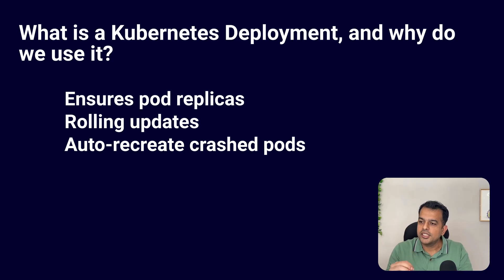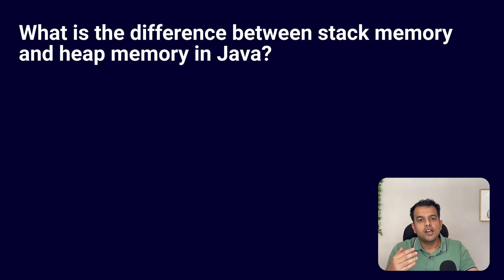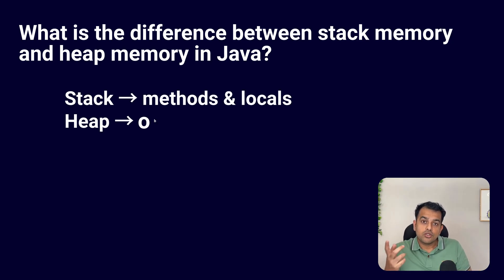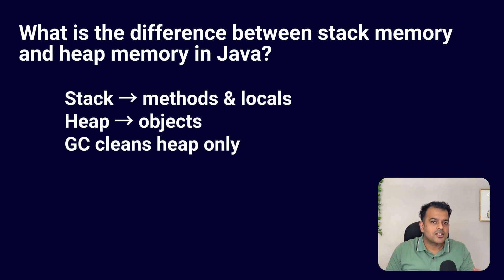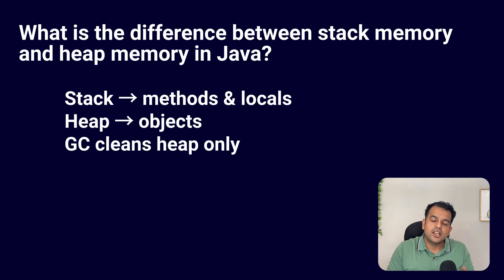There was also a basic Java question: what is the difference between stack memory and heap memory? Stack memory stores method calls and local variables, while heap memory stores objects and instance data. Stack is faster and managed automatically, while heap is slower but used for dynamic memory. Garbage collection in JVM cleans unused objects in the heap. Stack memory gets cleared when the method ends.